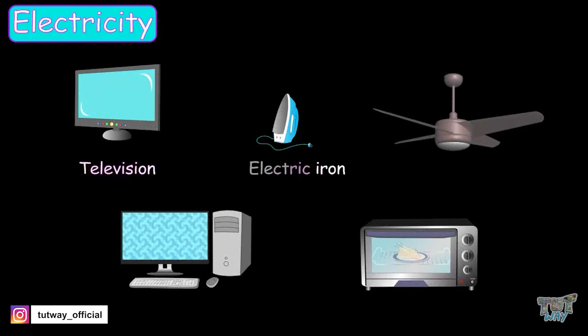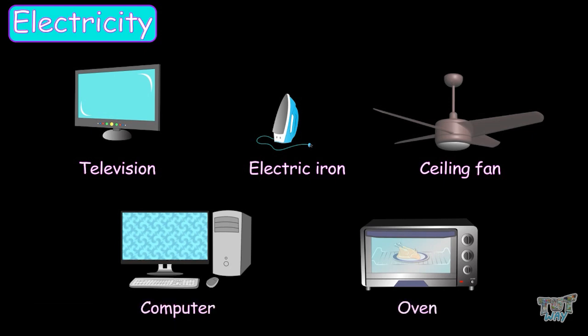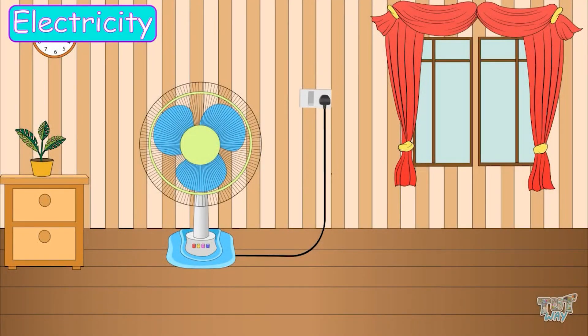All the appliances, like television, electric iron, ceiling fan, a computer, oven, all of these need electric energy in order to run. And you put their wire into the socket to turn them on, so that they get some energy which is electrical energy.